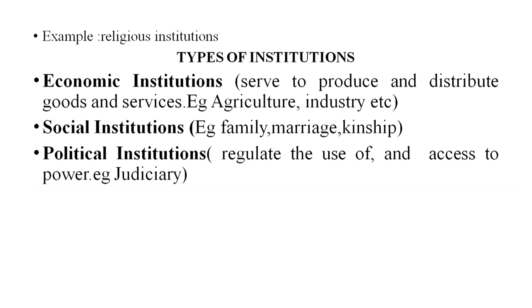Another institution is the political institution, which regulates the use of and access to power. Political institutions are extremely important as decision-making institutions. For example, we have the judiciary and local governing bodies like the Panchayati Raj institutions, which provide reservations for people in grassroots democracy — specifically women — through the 73rd and 74th Amendment Act. Political institutions not only regulate power but also bring about empowerment of people like women, who have long been deprived of decision-making positions.